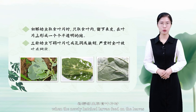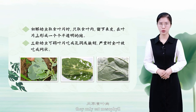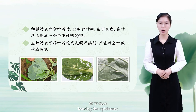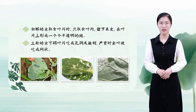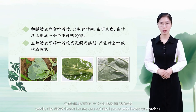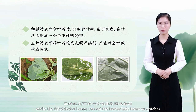When newly hatched larvae feed on leaves, they only eat the mesophyll, leaving the epidermis. The third instar larvae can eat the leaves into holes or notches.